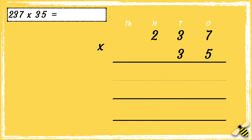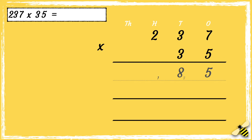First we'll multiply 5 by 7 — 5 times 7 is 35. We can drop the 3 tens below in the tens column. Then we can multiply 5 by 3 tens — 3 times 5 is 15, and then add the extra 3 is 18. We can drop the 1 below in the hundreds column.